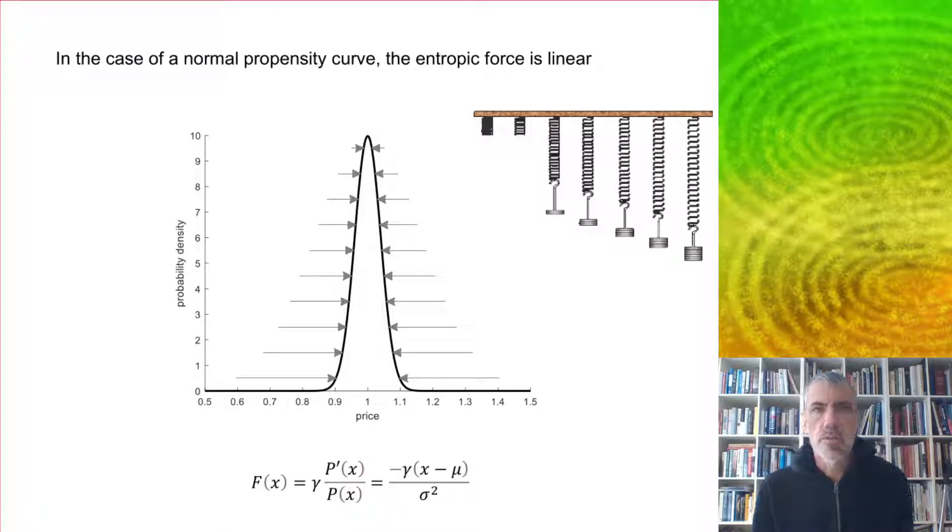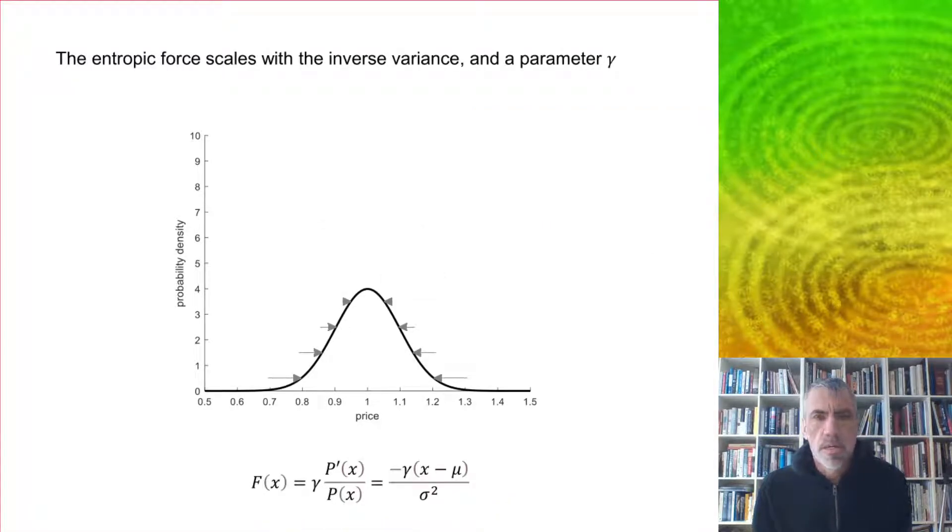In the case of a normal propensity curve, the entropic force turns out to be linear, which of course is the equation for a spring system. You can imagine there's a spring force which is constraining the probability to stay within a certain range. This entropic force scales with the inverse variance, this sigma squared term on the bottom, and also with a parameter gamma, which has units of energy. If you have a larger variance, then the corresponding entropic force is weaker.